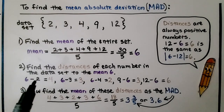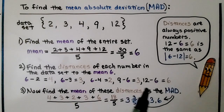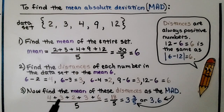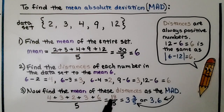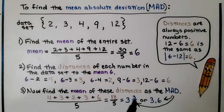So our distances are 4, 3, 2, 3, and 6. We find the average of those distances — the mean of these distances. We add 4 plus 3 plus 2 plus 3 plus 6 and get 18. Because there are 5 numbers, we divide it by 5. 18 divided by 5 equals 3 and 3 fifths, or as a decimal, 3.6. That's our MAD.